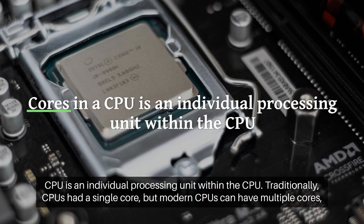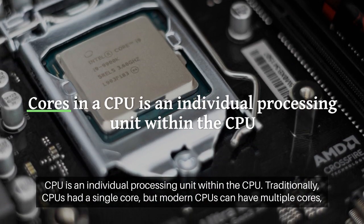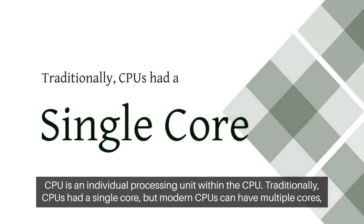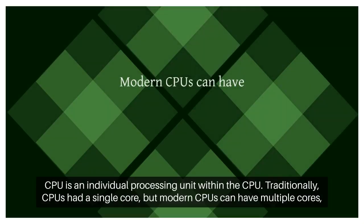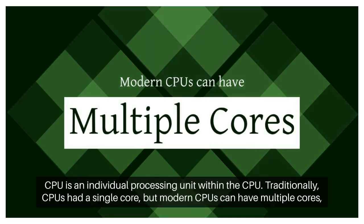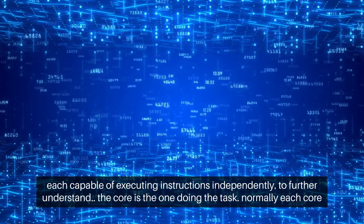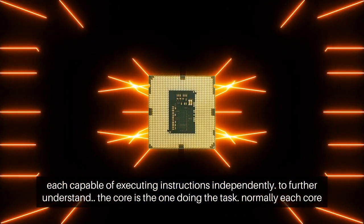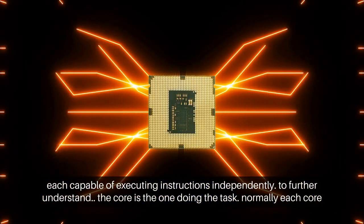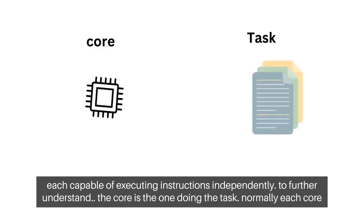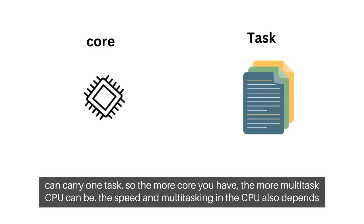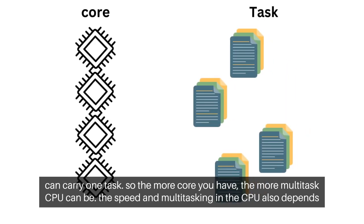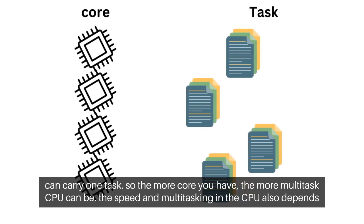Cores in a CPU are individual processing units within the CPU. Traditionally, CPUs had a single core, but modern CPUs can have multiple cores, each capable of executing instructions independently. The core is the one doing the task, and normally each core can carry one task. So the more cores you have, the more multitasking the CPU can do.